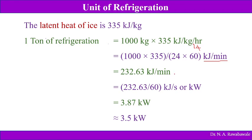Converting 232.63 kilojoules per minute to kilojoules per second (kilowatt) by dividing by 60, this works out to be 3.87 kilowatt. Approximately it is taken as 3.5 kilowatt — so one ton of refrigeration is taken as 3.5 kilowatt, or it is sometimes expressed as 210 kilojoules per minute, as found in books.